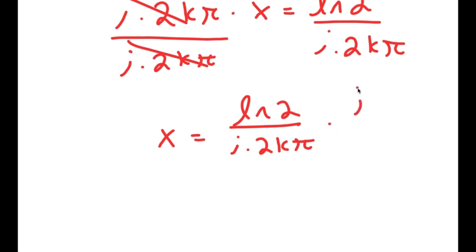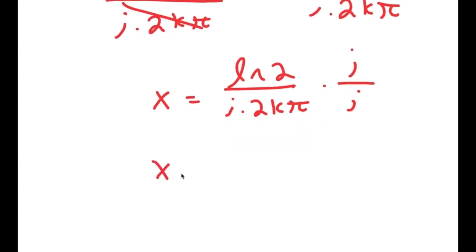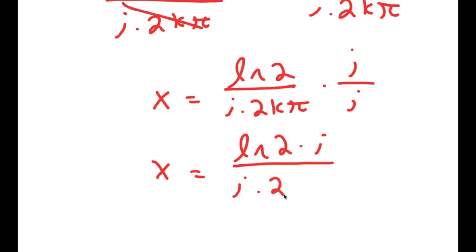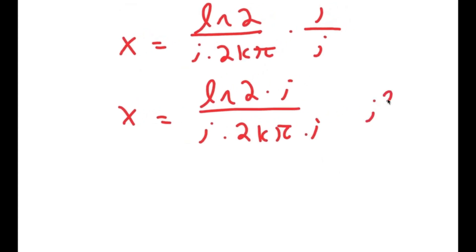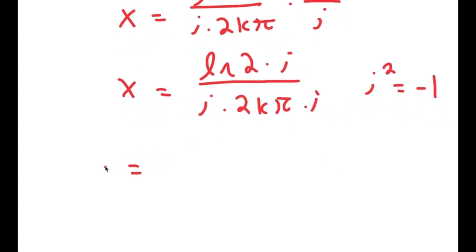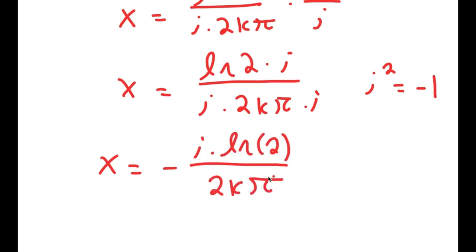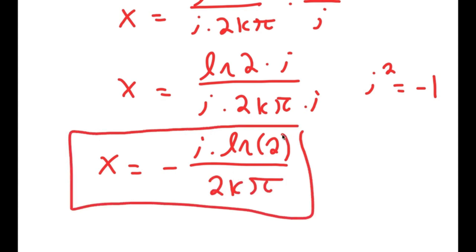Now I'm going to multiply both sides by i over i, which equals 1. So x equals ln(2) times i over i times 2k pi times i. Since i times i is i squared, and i squared equals negative 1, I get x equals negative i times ln(2) over 2k pi. This is my answer to this equation.